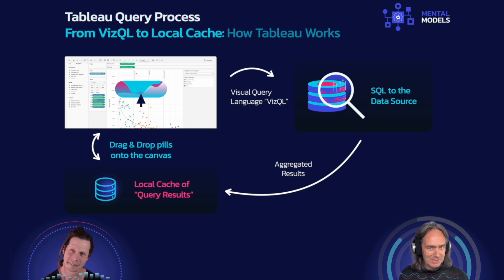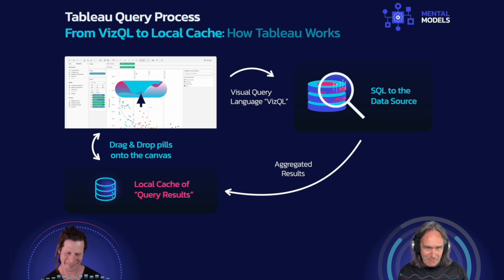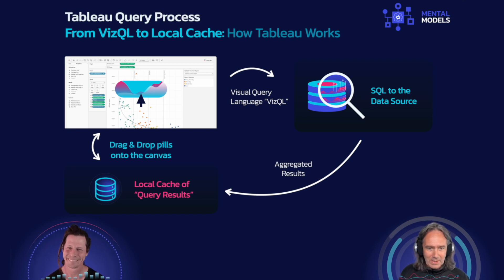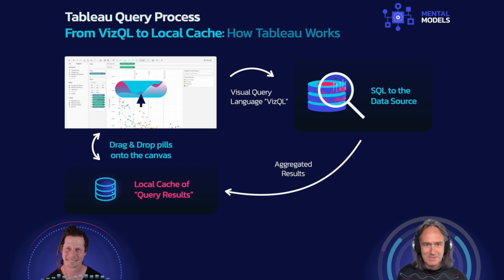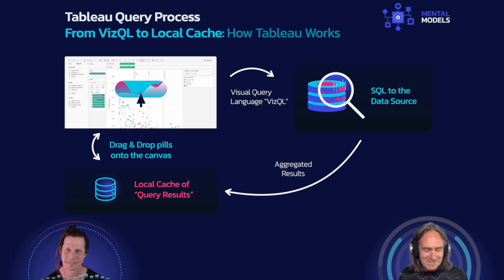When we're talking about aggregation and when we get into table calculations — what is the table that a table calculation is using? It's that local query cache. What are those query results, or how do those query results change when we're using measure names and measure values versus not, or using multiple mark cards and multiple axes? There's a lot of richness in this that I think we can have fun with. This is the first of 11 or 12 mental models, so thank you for accompanying me on this one. We'll see you next time for mental model number two. Yeah, this has been great. Thanks, look forward to the next one.